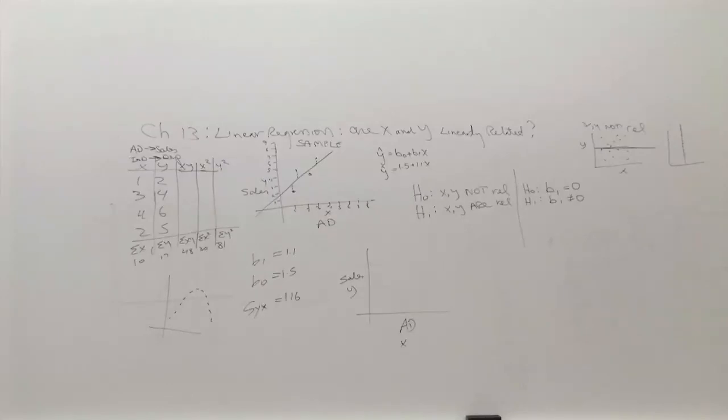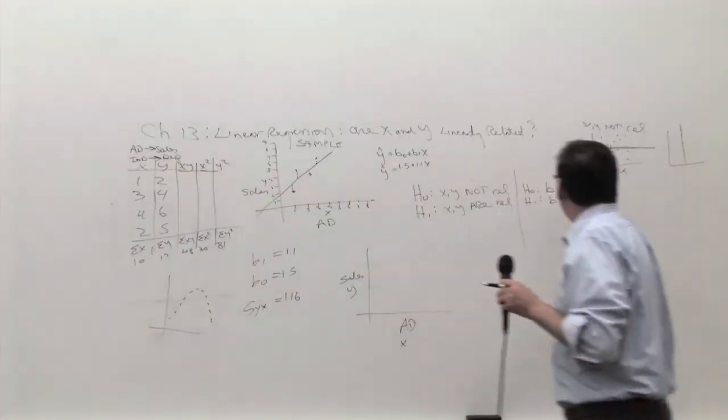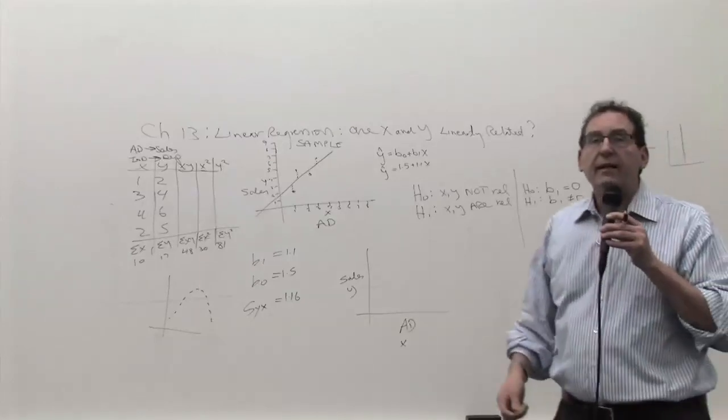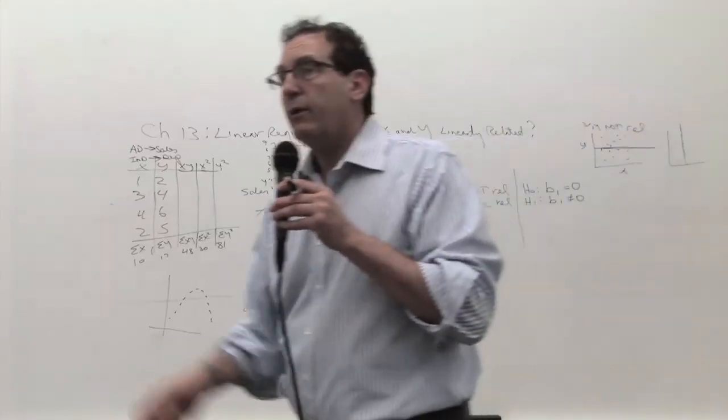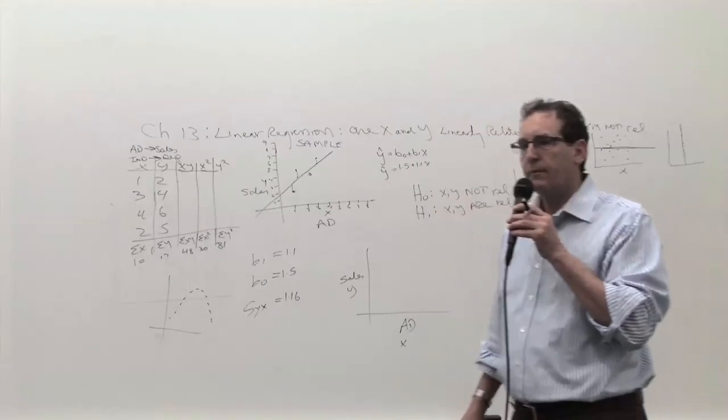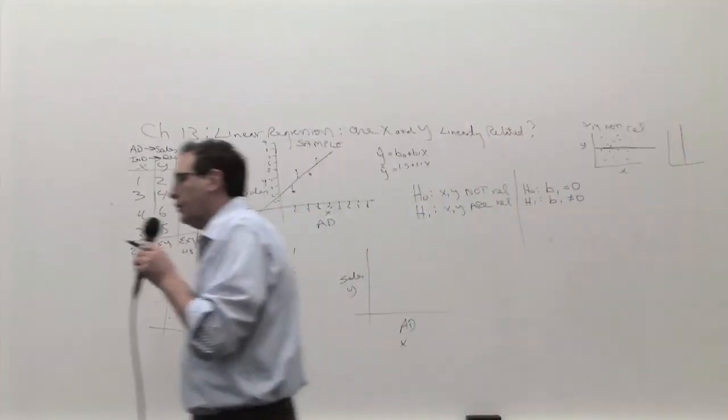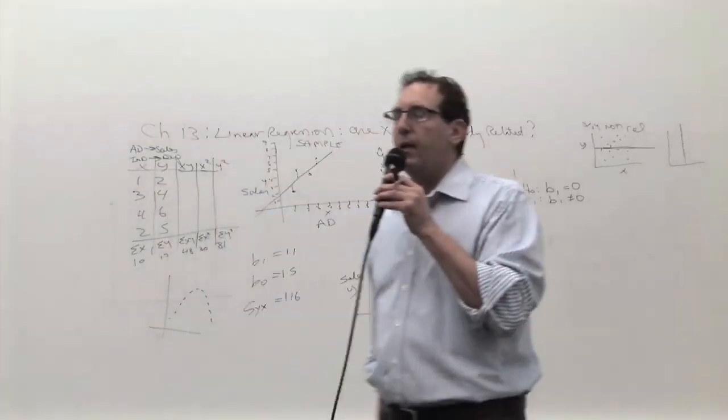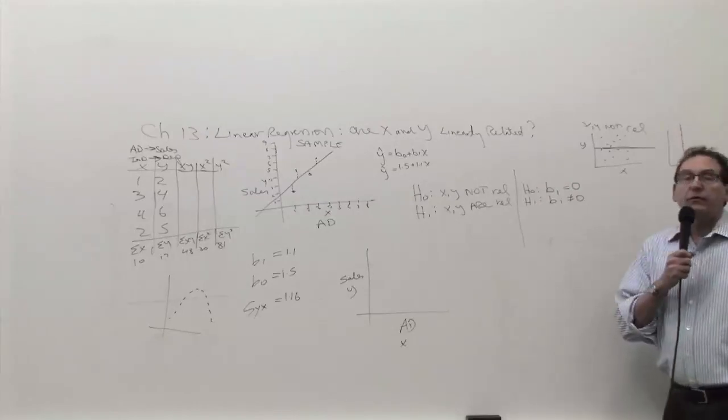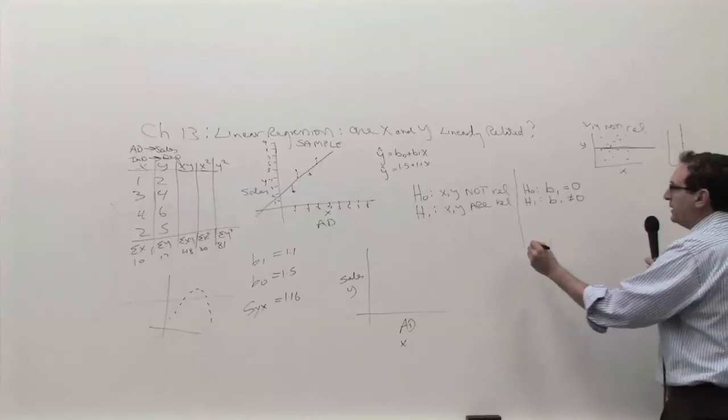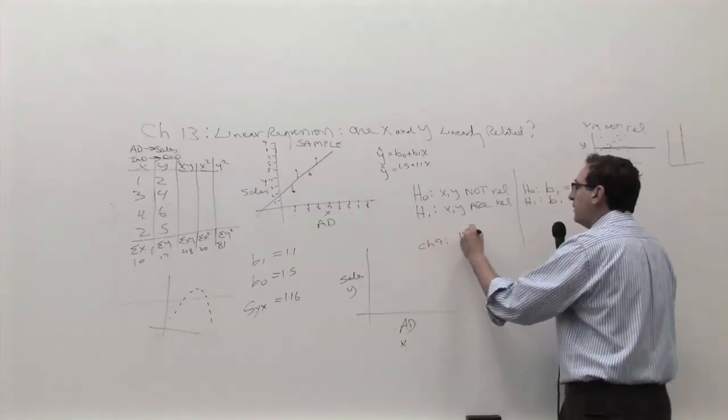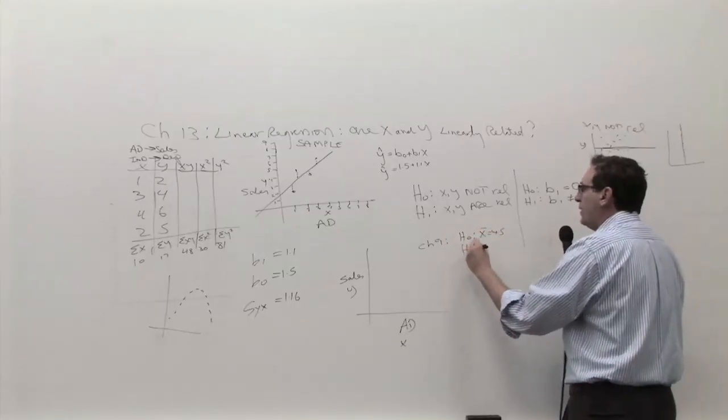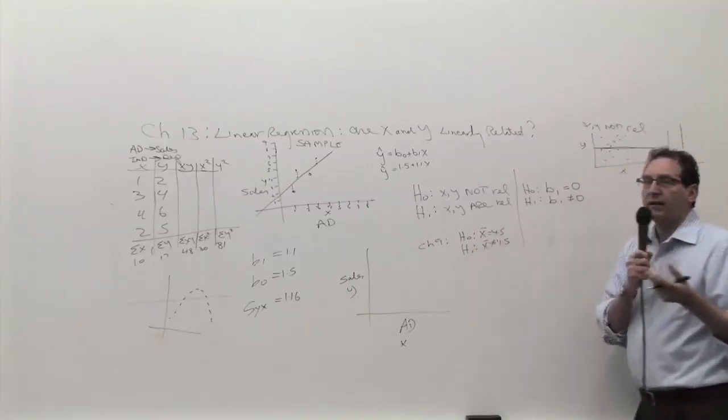That's very warm or hot. Let me elaborate on what you two guys just said. Let's go back to chapter nine, the first time we saw hypothesis testing. Let's say I put down for hypothesis testing chapter nine, one sample. I say H0: X bar equals 4.5, H1: X bar not equal to 4.5. Now that's basically correct. But what's wrong about this?